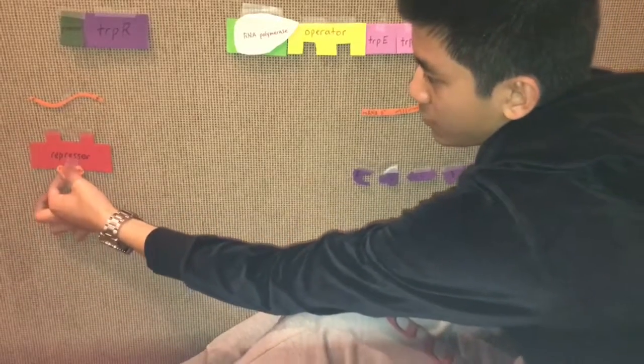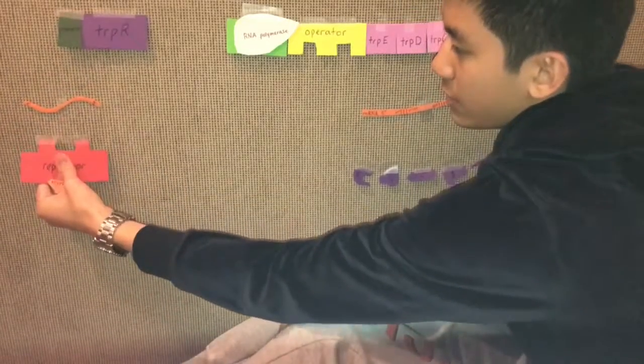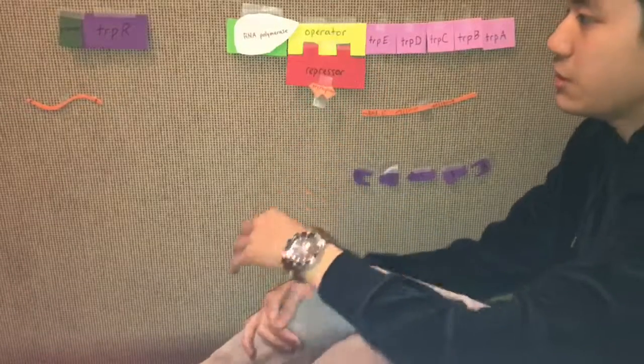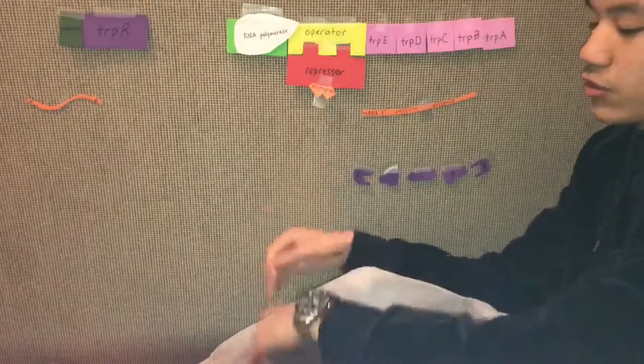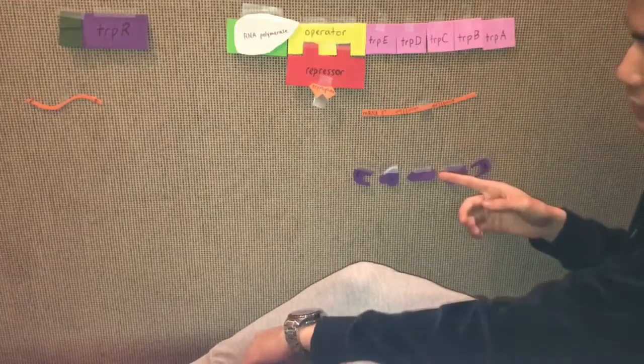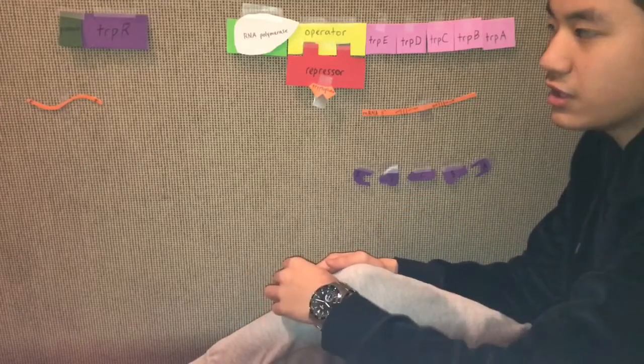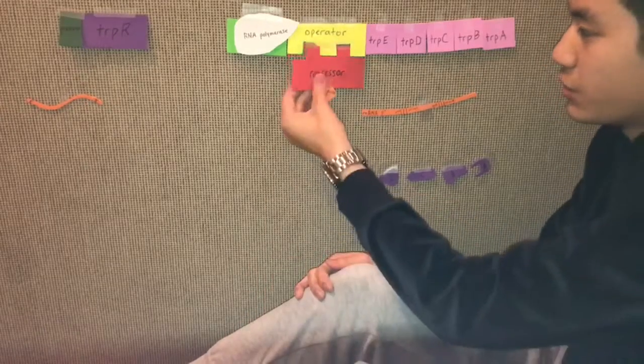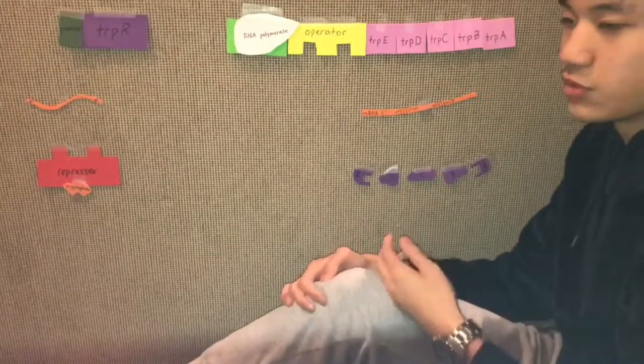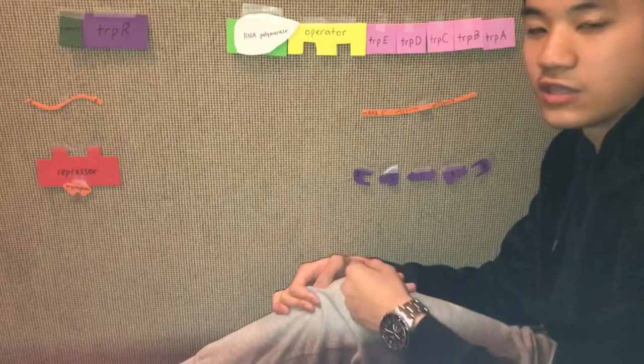So tryptophan binds with the repressor, and once the repressor is activated, it binds with the operator. This inhibits the ability of RNA polymerase to transcribe the genes that allow for the synthesis of tryptophan. Once tryptophan levels are regulated and are back to normal, the repressor will unbind with the operator and allow for the synthesis of tryptophan again. This is an example of negative repressible feedback.